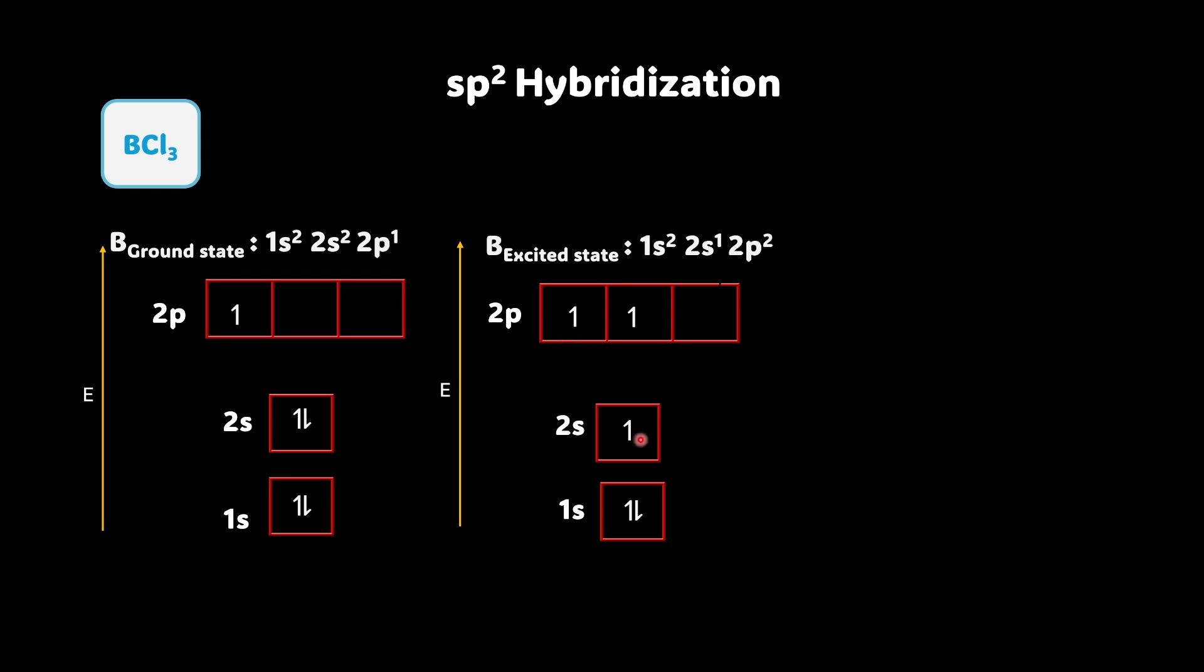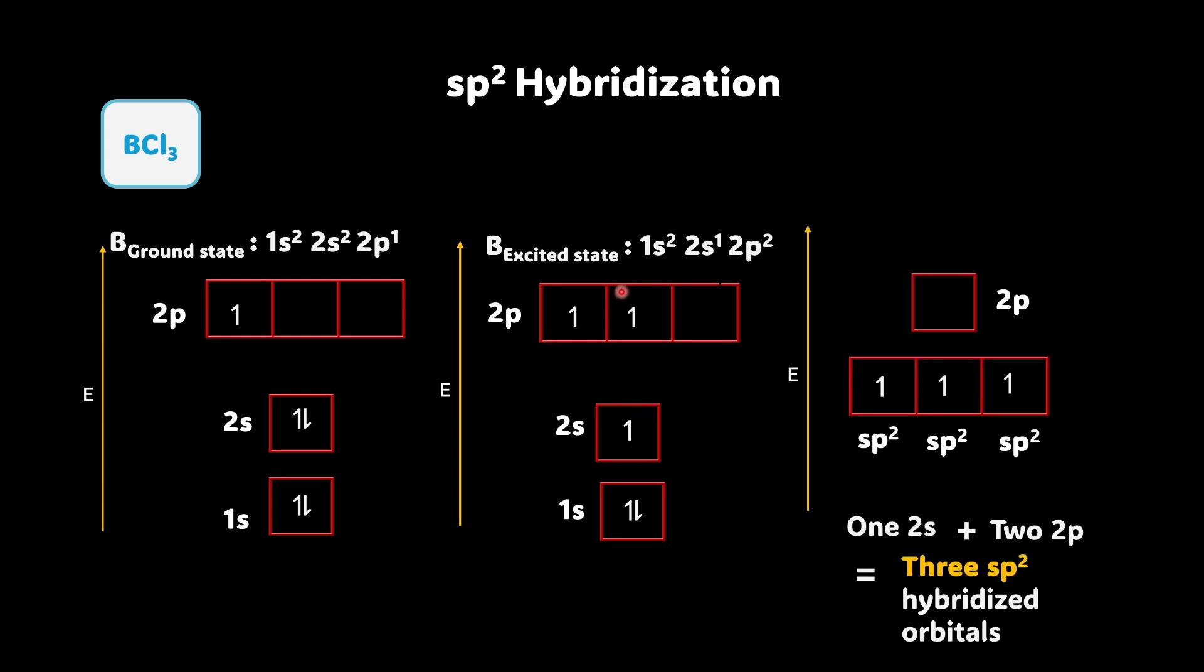So you can see that now we have a possibility of three bonds that can be formed. So this 2s orbital and two of these 2p orbitals hybridize to form three sp2 hybridized orbitals. And you have one unoccupied 2p orbital and the three sp2 orbitals align themselves in a form of a triangle giving you a trigonal planar geometry.